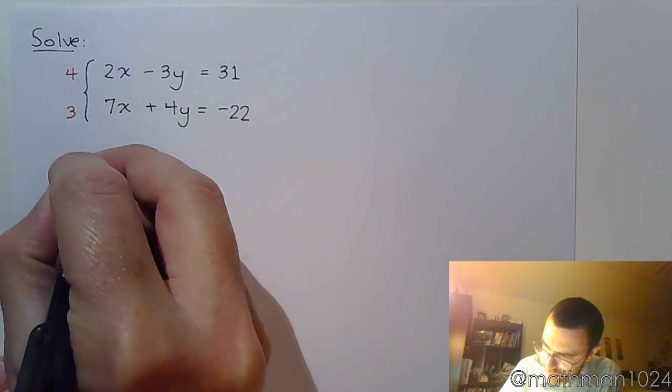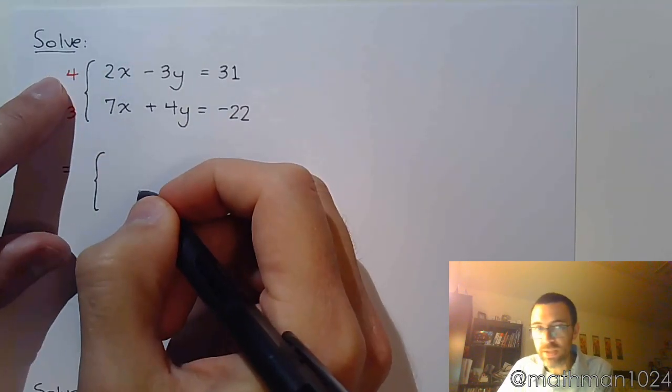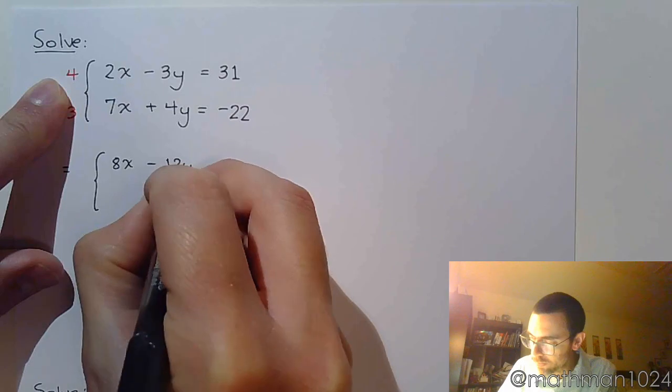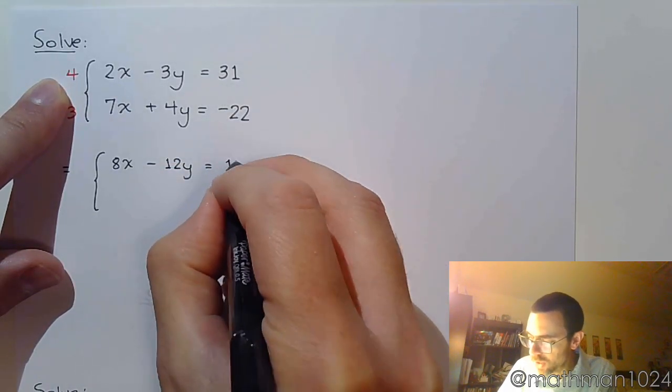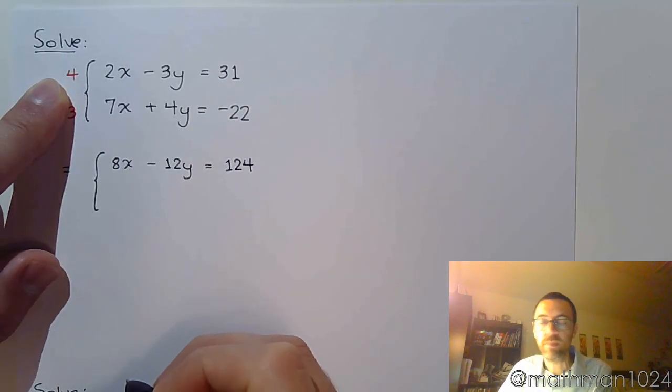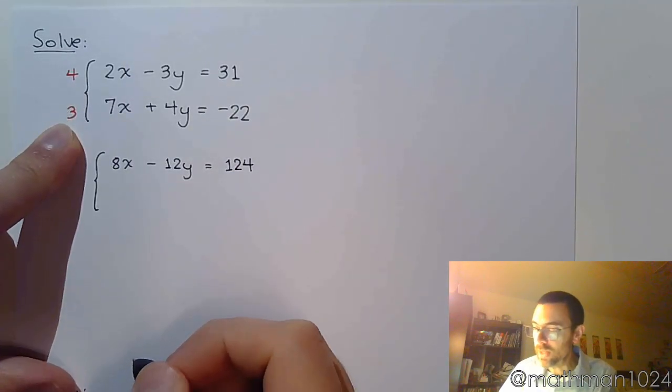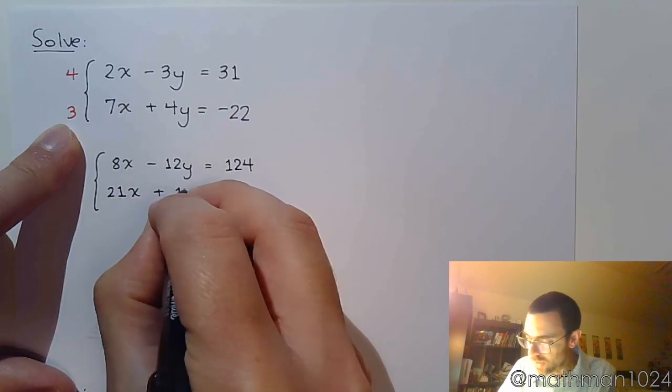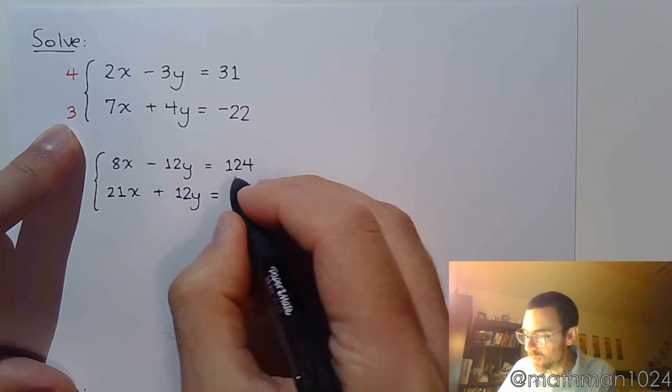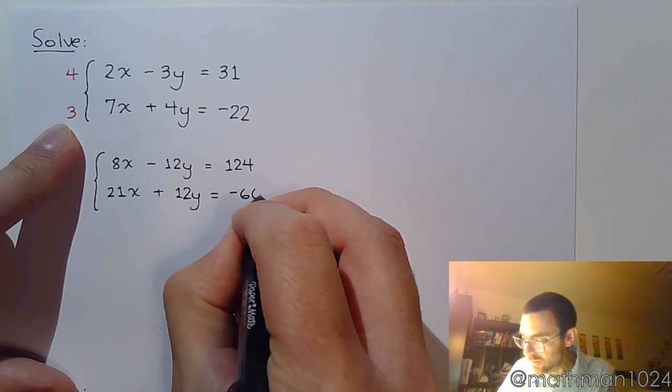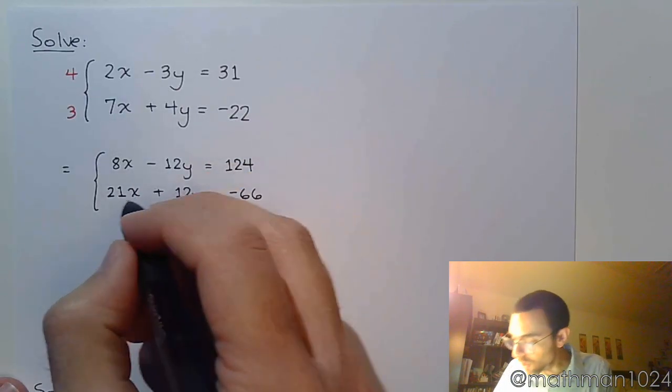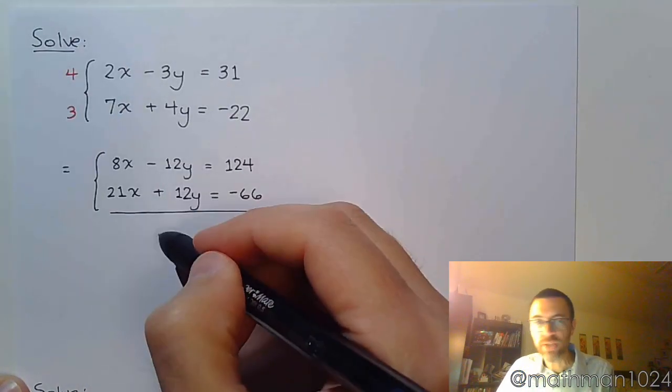All right so when I multiply everything in the top equation by 4 I get 8x minus 12y, 4 times 31 is 124. Multiply the second equation times 3 so that's 21x plus 12y equals 3 times negative 22 is negative 66. And you see that these guys are additive inverses so that when I combine everything on the left those guys are going to go away.